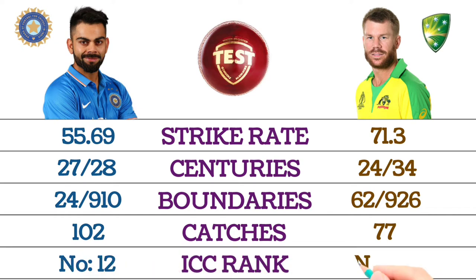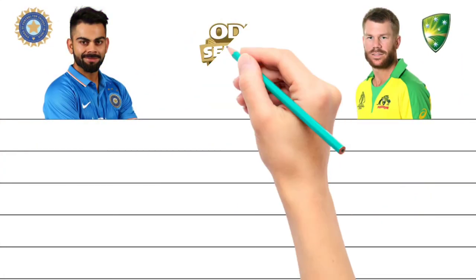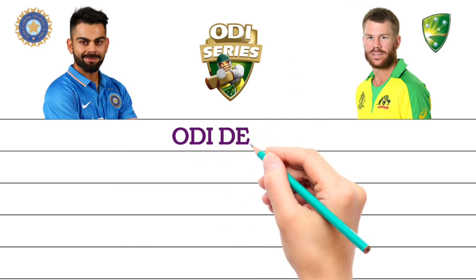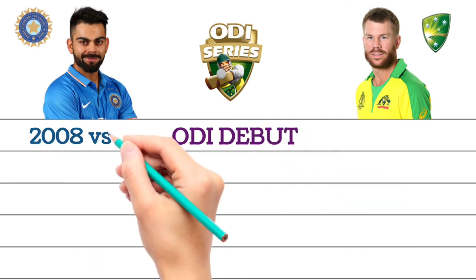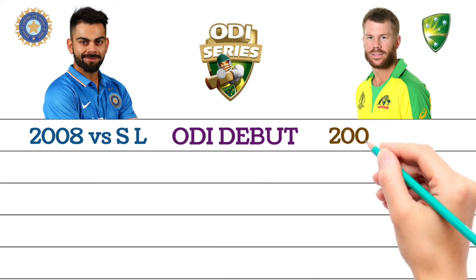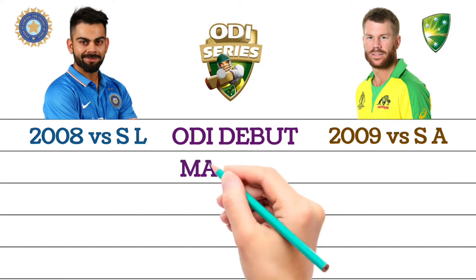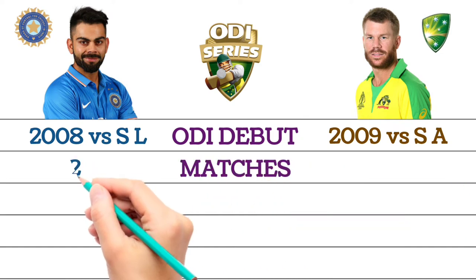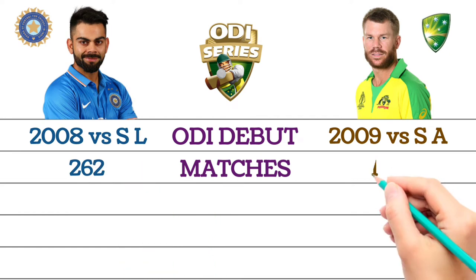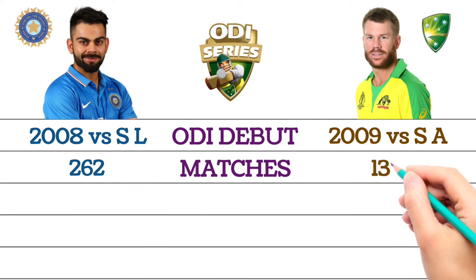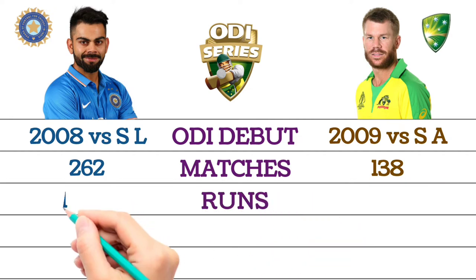Test ICC rank: Virat Kohli number 12, David Warner number 19. ODI career — ODI debut: Virat Kohli debuted against Sri Lanka in 2008, David Warner debuted against South Africa in 2009. Total matches: Virat Kohli 262 matches, David Warner 138 matches.